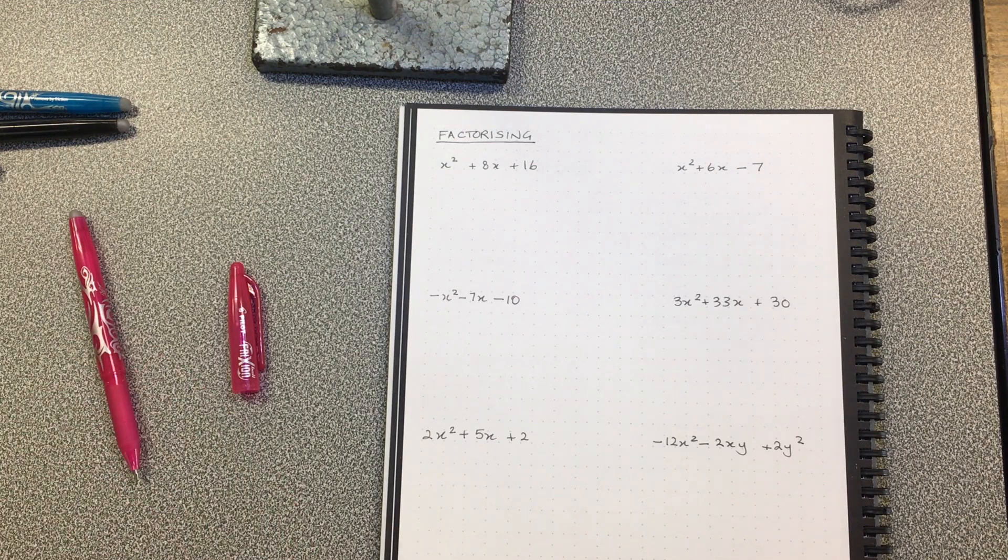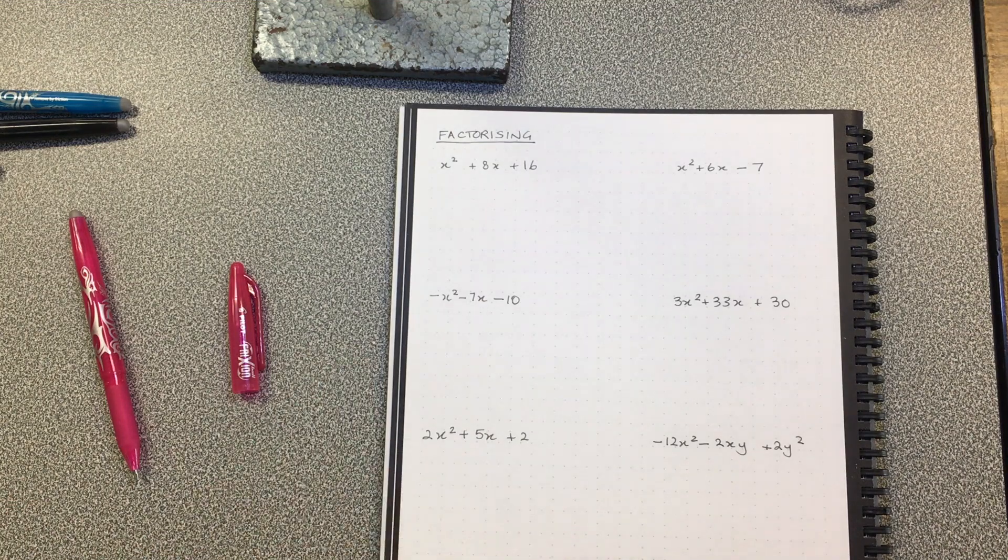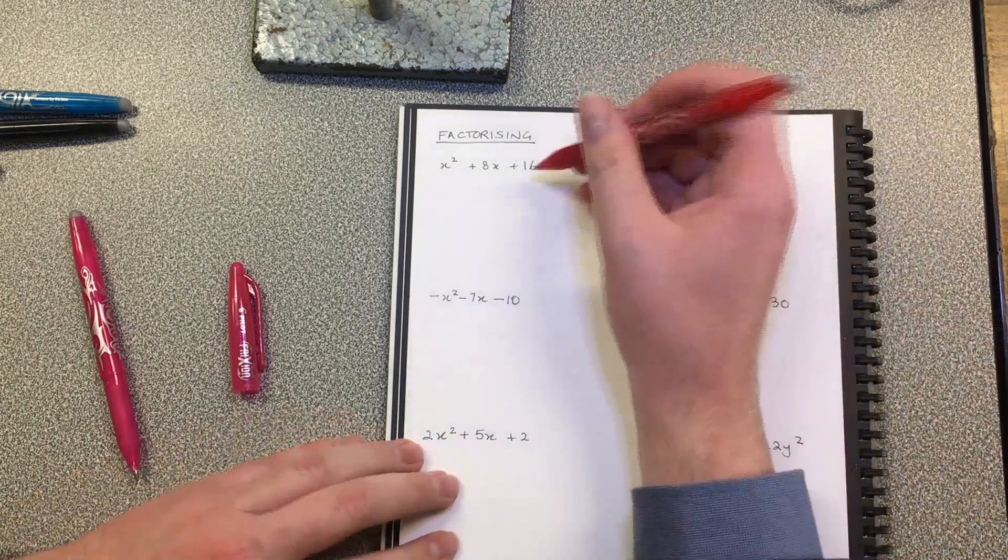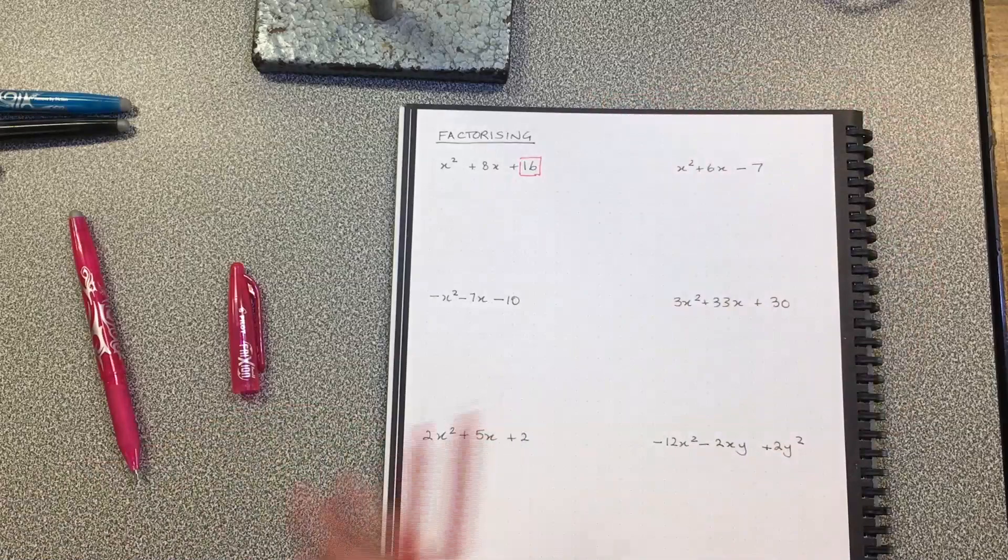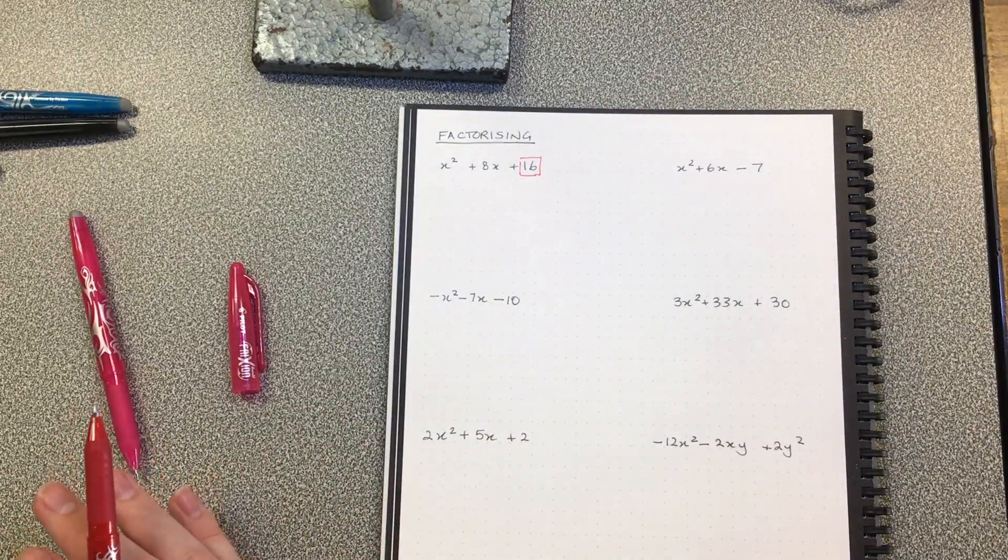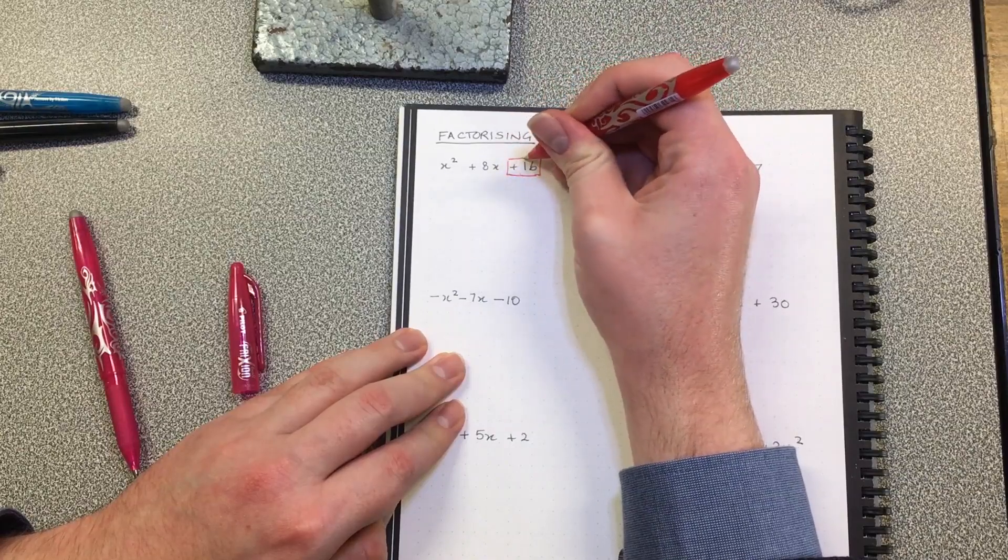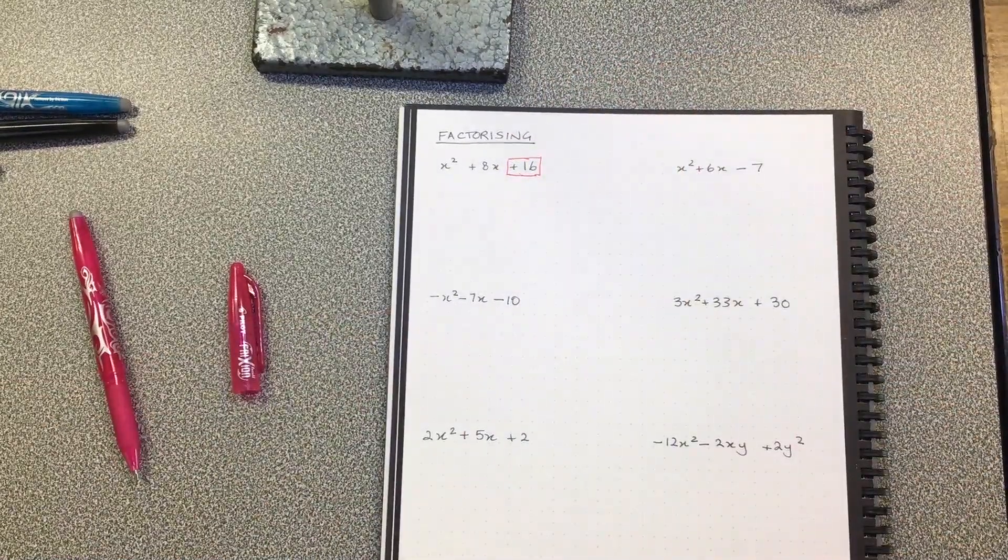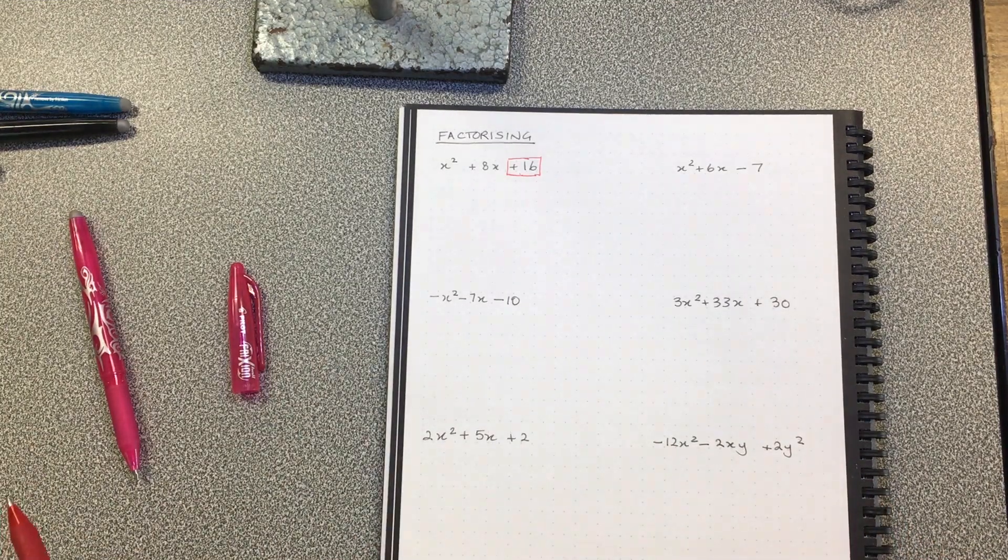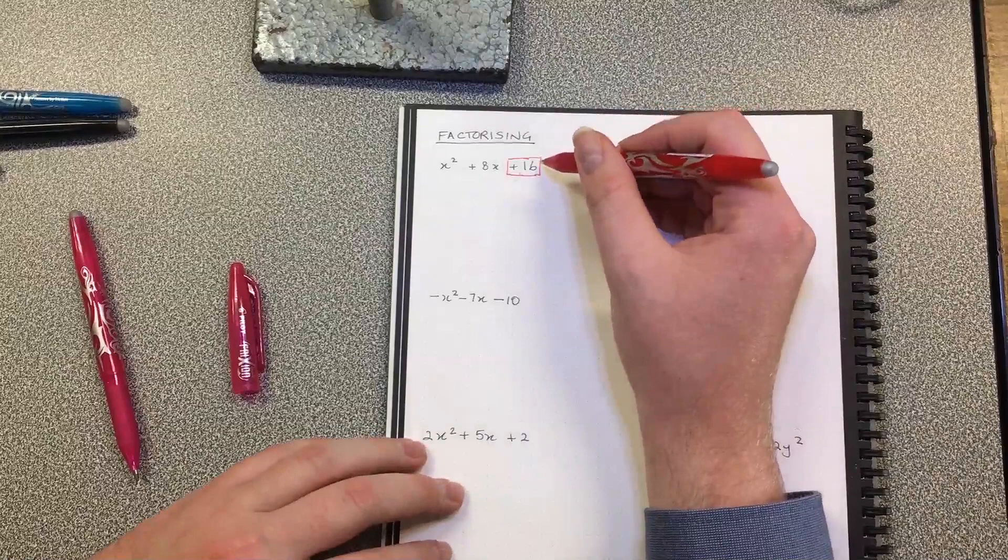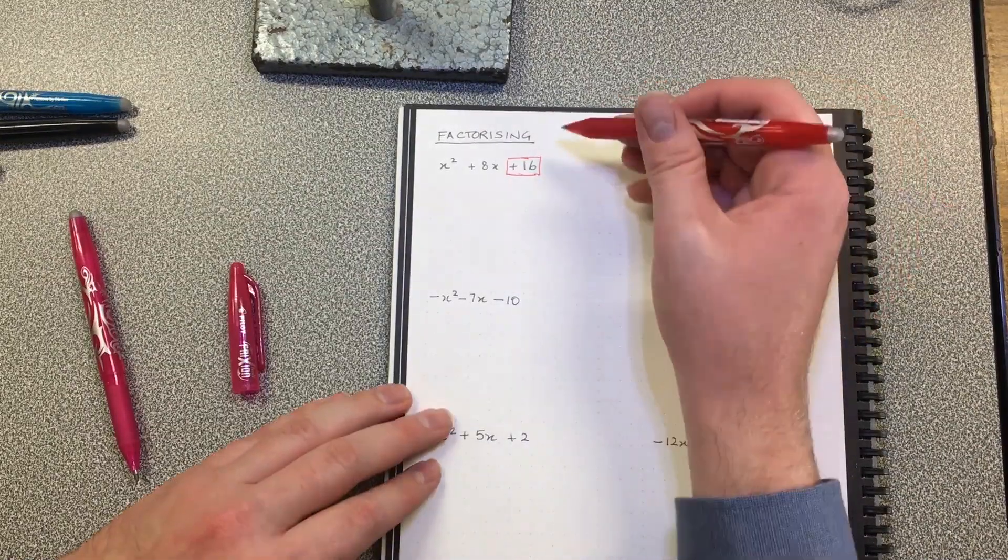One of the things that's the key, in my opinion, to solving factorising is knowing factors of things. And the things that you need to know the factors of is this last number here. In order to be confident with quadratic equations, what I'm about to do on paper, you need to be able to do in your head.